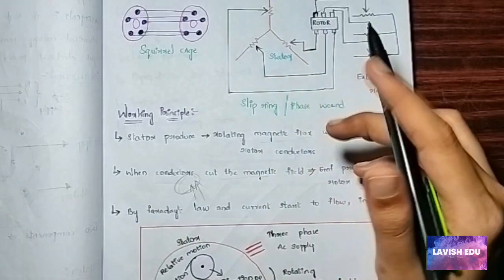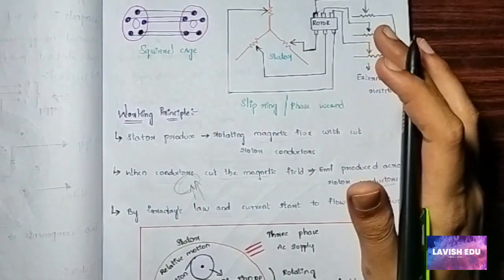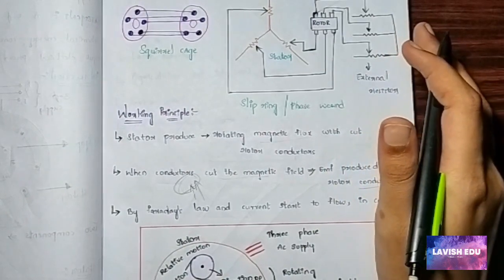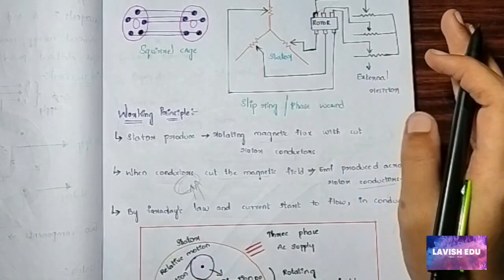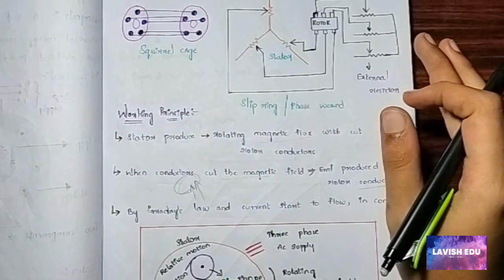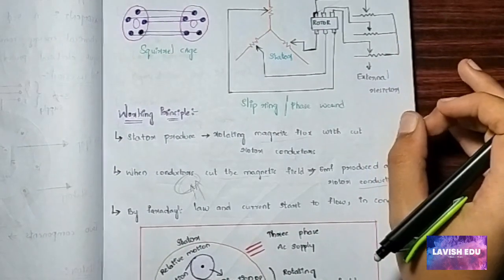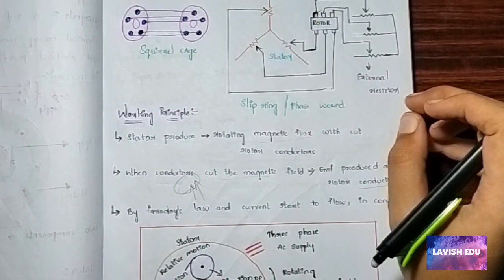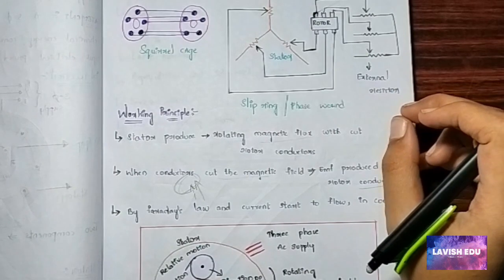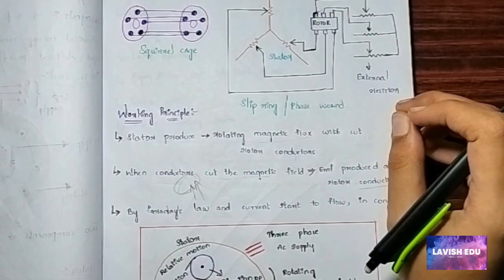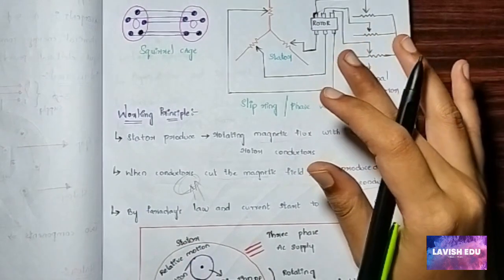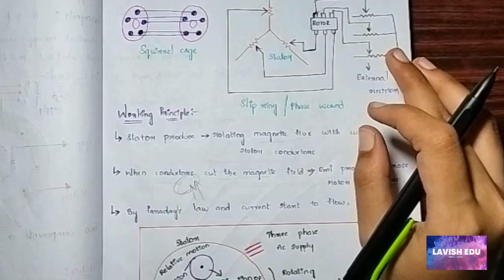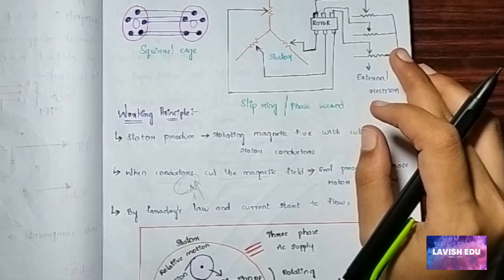You should present your answer in this form only: first, present your definition; second, present your construction; third, present your working principle; and fourth, give your conclusion as well as the applications. In electrical machine questions, always give the applications, as they carry two or three marks.